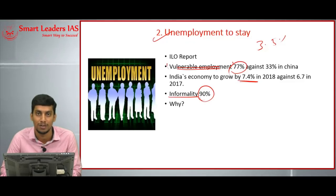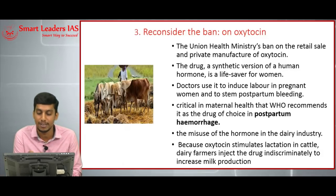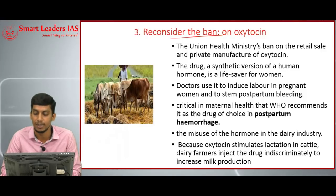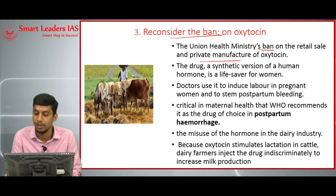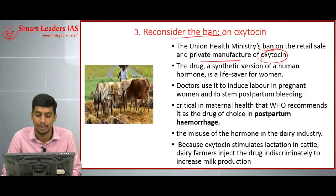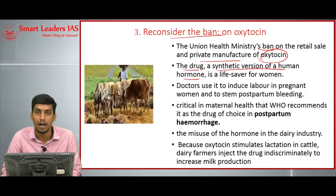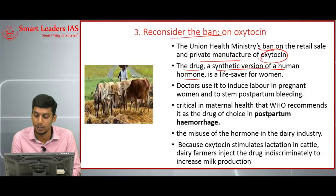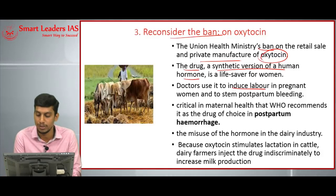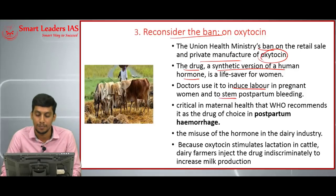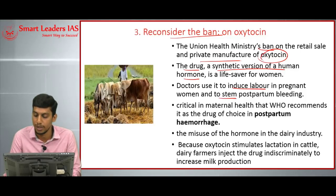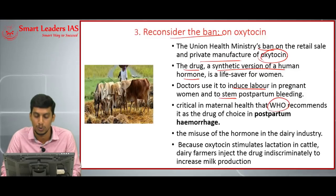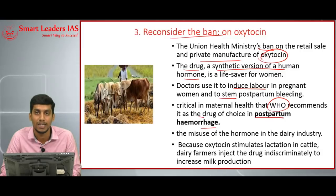Today's third topic is reconsidering the ban on oxytocin. Recently, the Union Health Ministry banned the retail sale and private manufacture of oxytocin. What is oxytocin? It is a synthetic version of a human hormone — a lifesaver drug for women. Doctors use oxytocin to induce labor in pregnant women and to stem postpartum bleeding. It is very critical in maternal health, which is why the World Health Organization recommends this drug for postpartum hemorrhage.